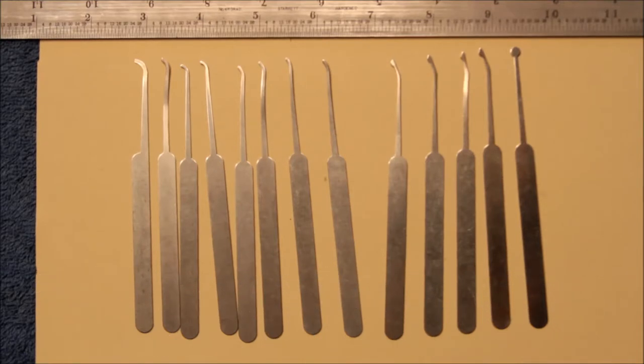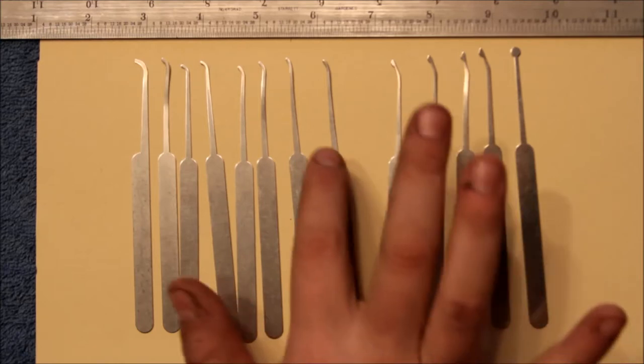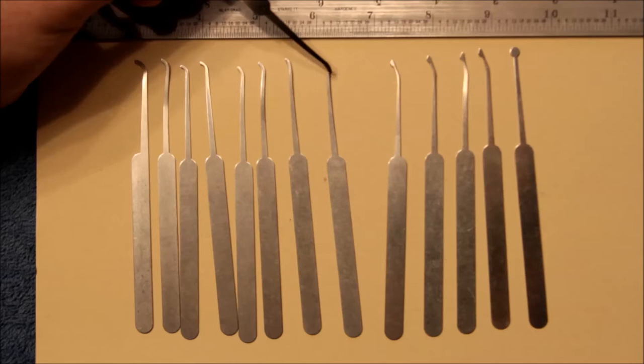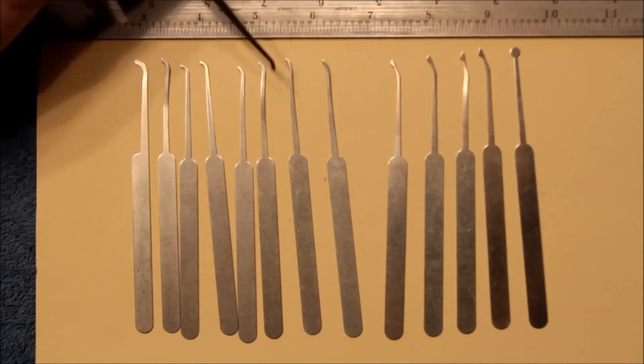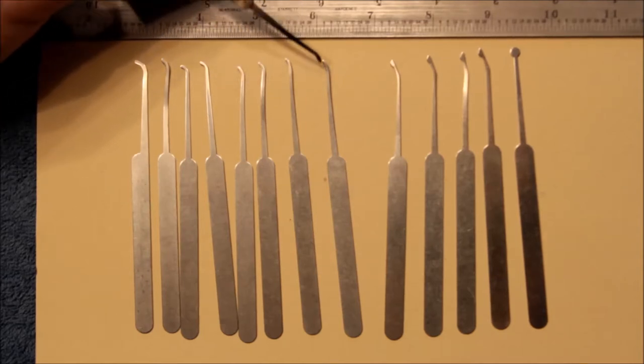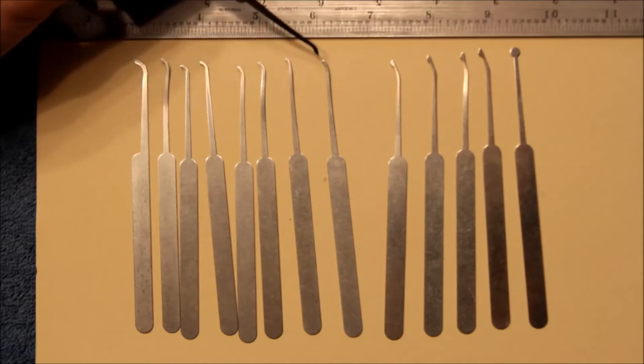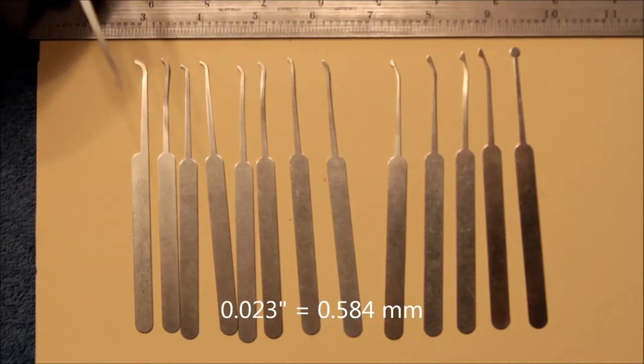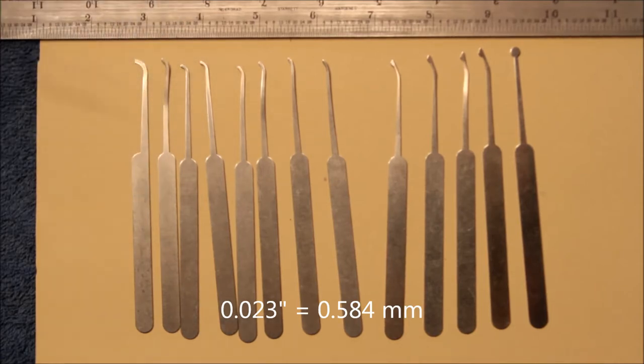But anyway, these are a slimmer line pick, and when they say slim line they're talking both about this width here, the width of the shaft, as well as the thickness of the metal. So these are all 0.023. What I assume is stainless, but I'm not 100% sure.